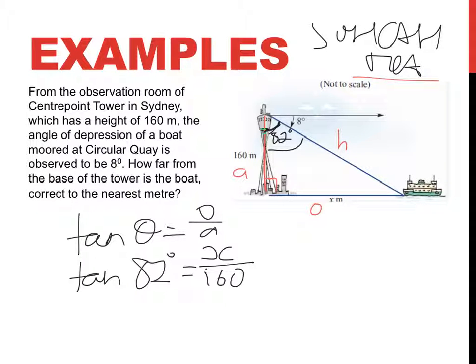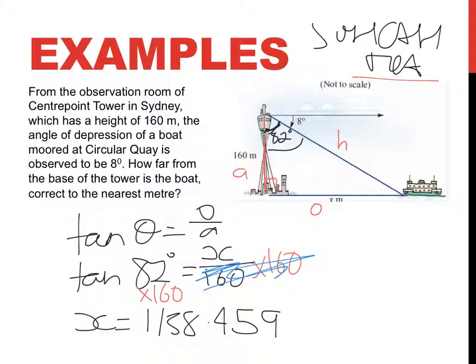That x has been divided by 160, so to get rid of it I times. If I times that side, I have to do the same to that side. These guys cancel out, so I'm just left with x. And if I put tan 82 times 160, I'm going to get an answer of x being 1138.459.